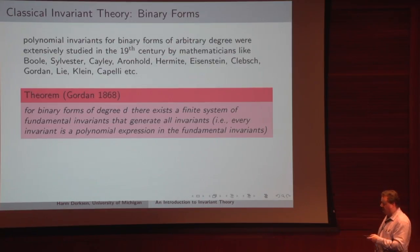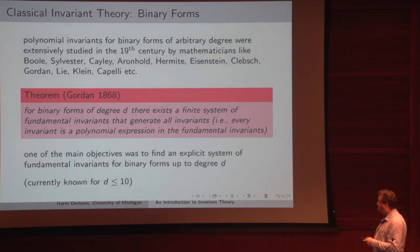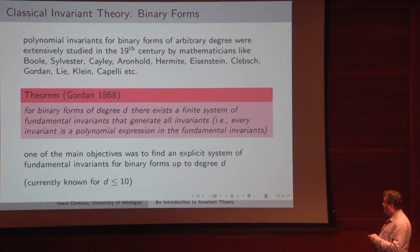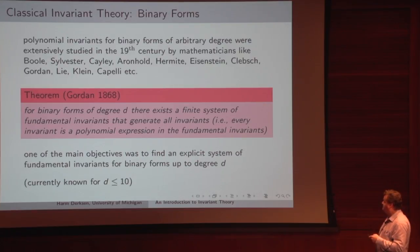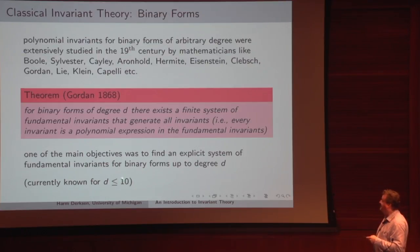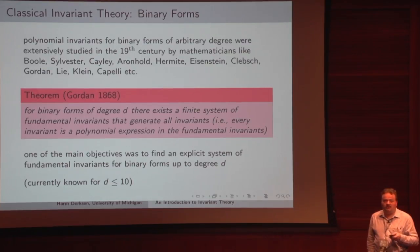This was studied extensively in the 19th century, starting with Boole and many others. Gordan's theorem was a breakthrough. Many mathematicians worked to explicitly calculate systems of fundamental invariants for binary forms of degree d. At the moment, such systems are known for d at most 10, so the problem becomes complicated quite quickly.